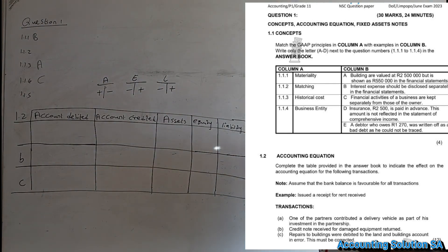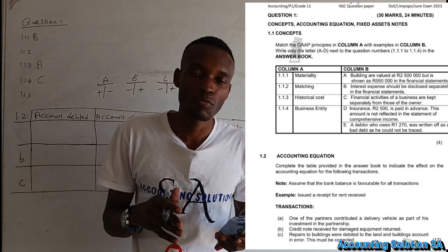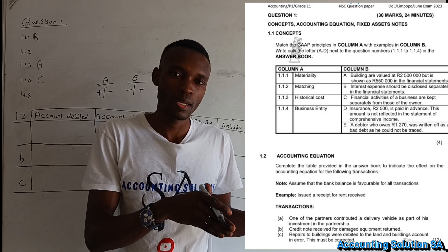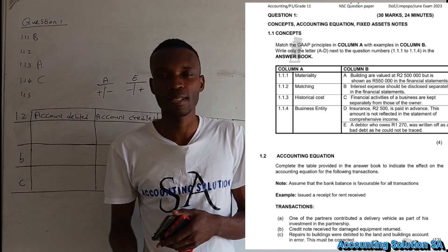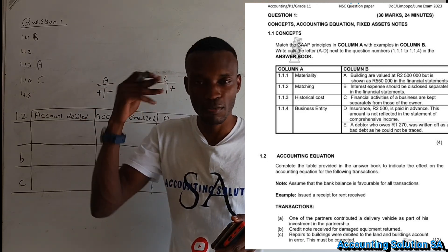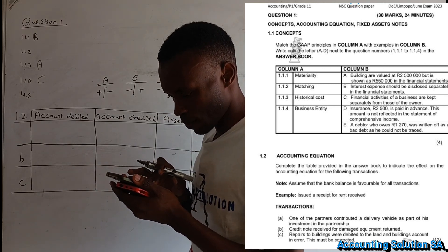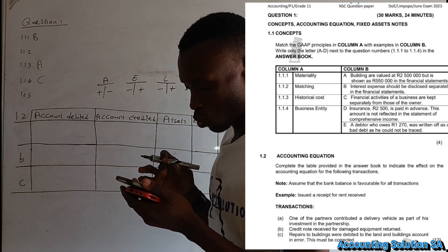Number D: Insurance of 2500 is paid in advance and this amount is not reflected in the statement of comprehensive income. This is the matching principle. The matching principle says we must only record expenses for the current 12 months — any income or expense paid in advance for next year must not be recorded in the current period. So number D will fall under the matching concept.